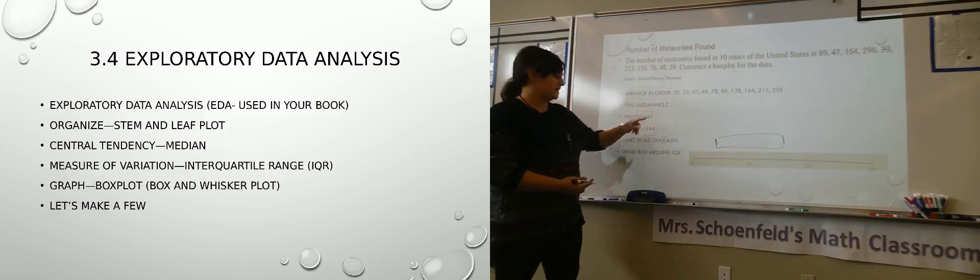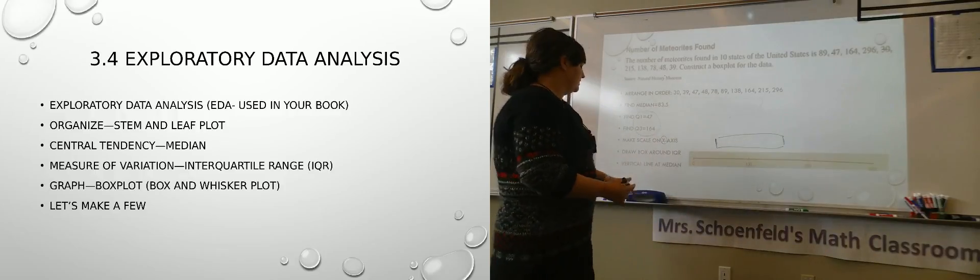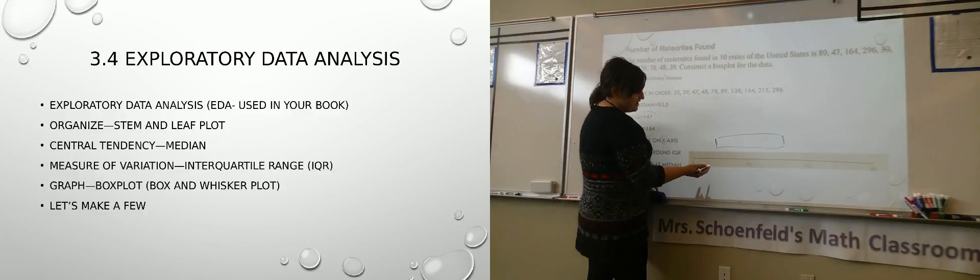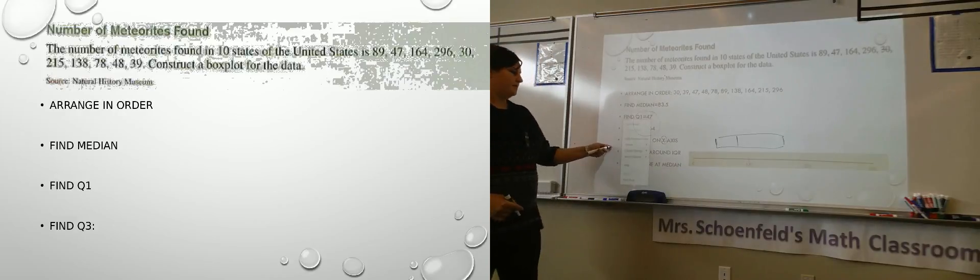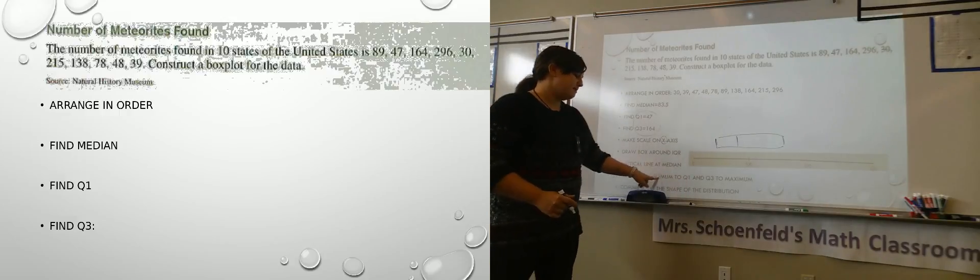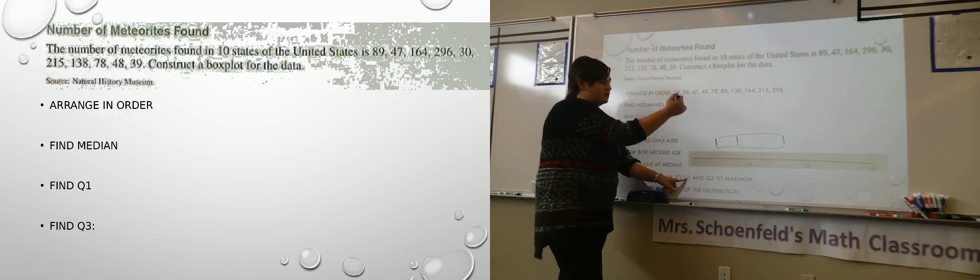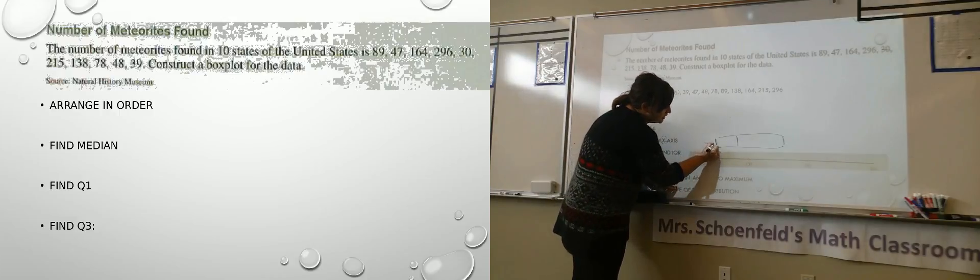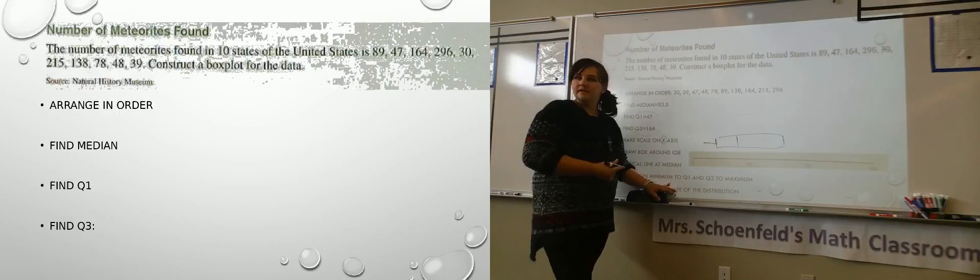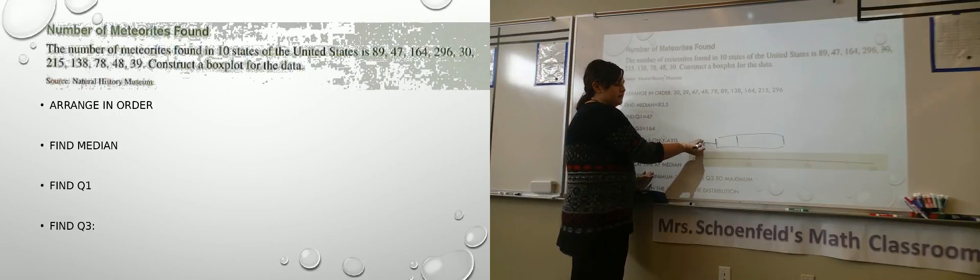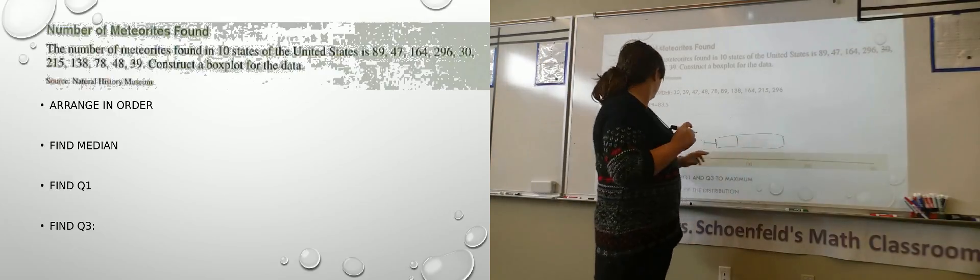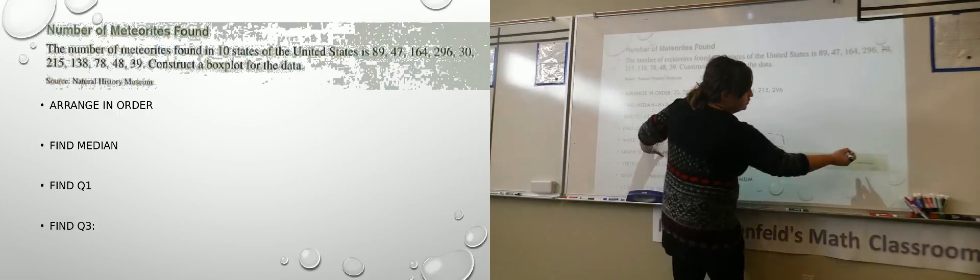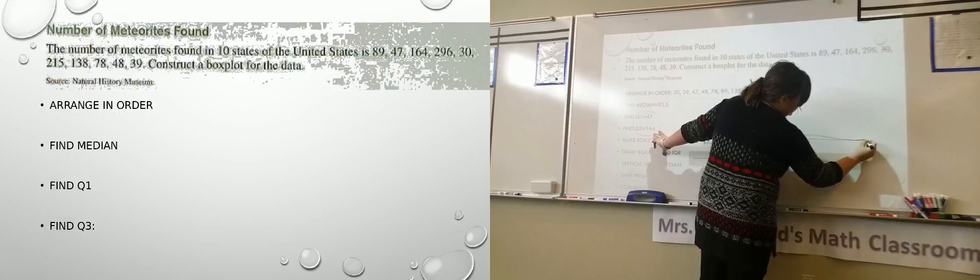Then we're making a line at the median. So a vertical line at the median for 83.5. That's about 50. Let's say that's about 83.5. Draw the lines from the minimum to Q1. So our minimum was 30. So 30 is about there. We're drawing a line. Some of the things we said, your book uses lines. Some people draw actual vertical lines in at that point. Also do Q3 to the maximum. So my Q3 was that 164 to 296. So all the way over here.